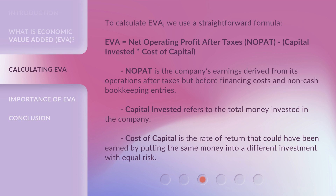To calculate EVA, we use a straightforward formula: EVA equals Net Operating Profit After Taxes (NOPAT), minus Capital Invested multiplied by Cost of Capital. NOPAT is the company's earnings derived from its operations after taxes but before financing costs and non-cash bookkeeping entries. Capital Invested refers to the total money invested in the company. Cost of capital is the rate of return that could have been earned by putting the same money into a different investment with equal risk.